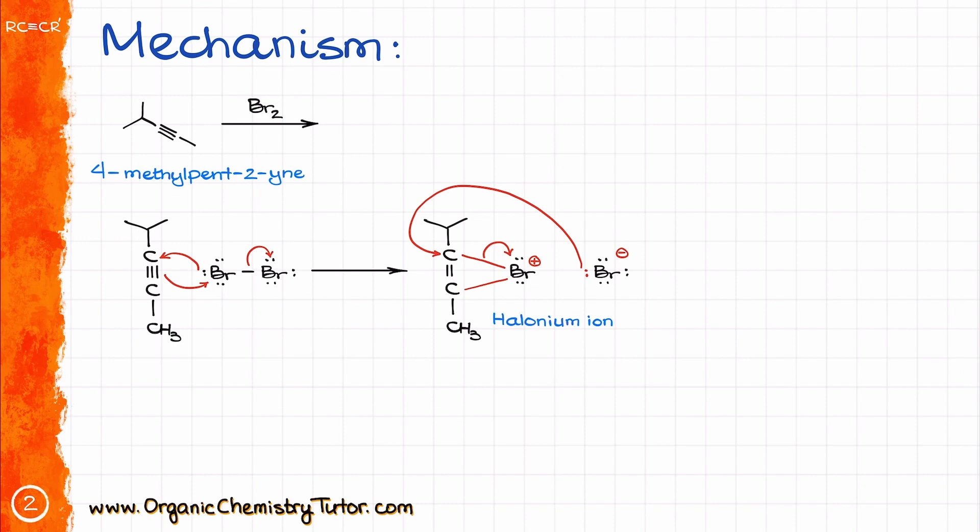In the next step, the bromine anion that we have floating around will open this halonium ion from the opposite side, giving us the corresponding alkene. And as you can see, this reaction is a strict anti-addition, making a trans product.